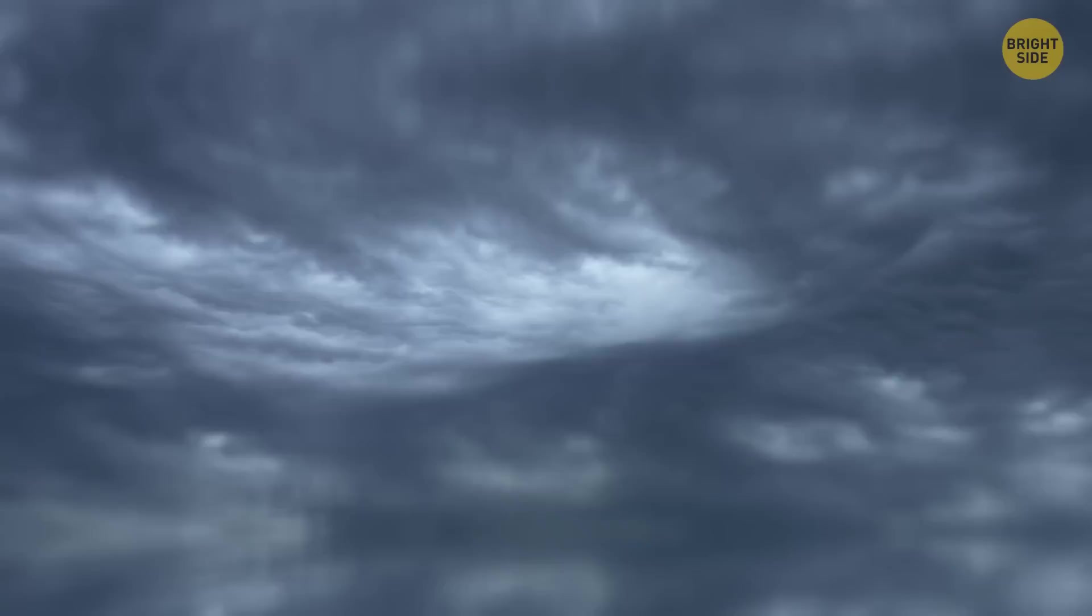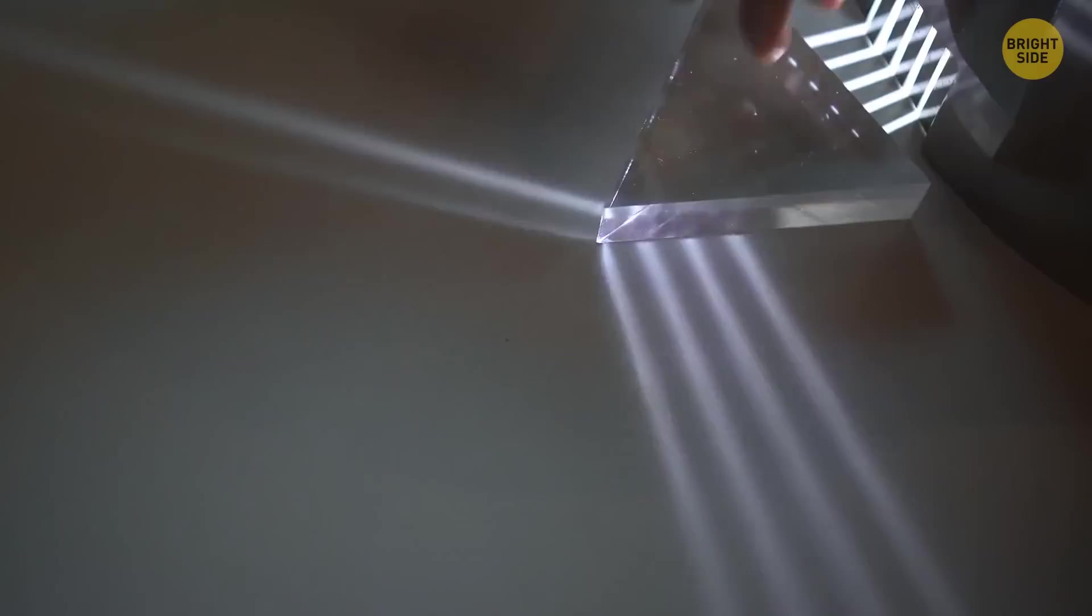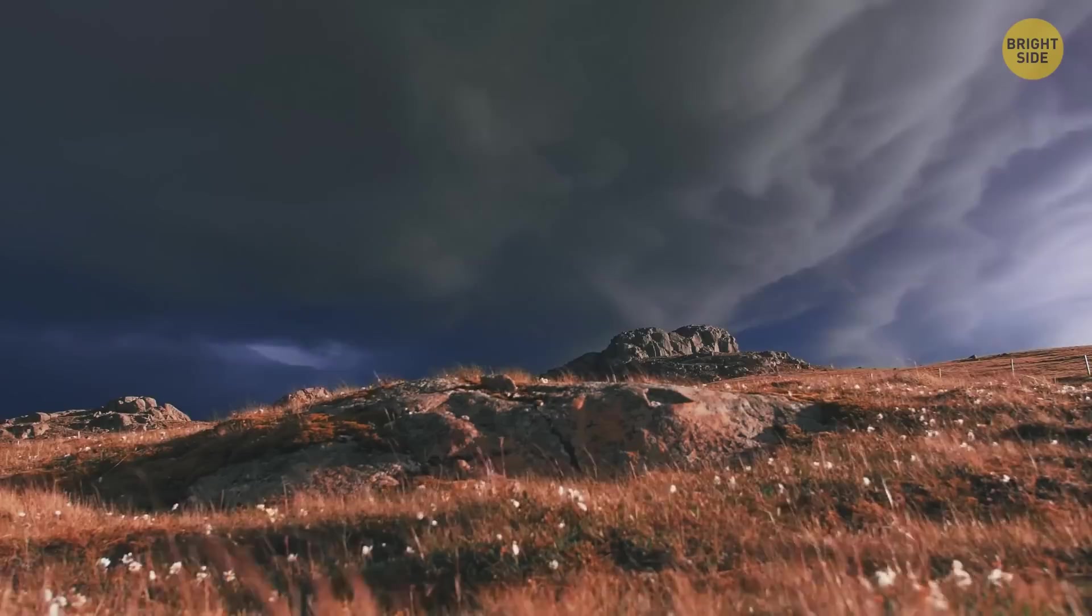When a storm is coming, clouds seem to turn dark, but it's just an illusion. Thin clouds on a sunny day let the light through easily. They also scatter all the colors of the light spectrum. This makes us perceive the clouds as white, but the thicker the clouds are and the more water droplets they contain, the less light they let through and the darker they look.